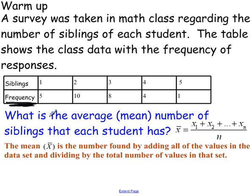So one way to interpret this is to interpret it in this way. There are five students with one sibling, ten students with two siblings, eight students with three siblings, four students with four siblings, and one student with five siblings.